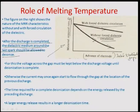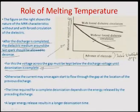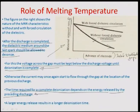This ensures current does not flow in the same highly-conducting ion path. The diffusion time for ions to emanate out must be provided by the system. The time required for complete deionization depends on the energy released by the preceding discharge — a larger discharge requires longer deionization time, which is reduced with forced circulation.